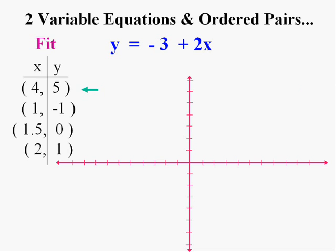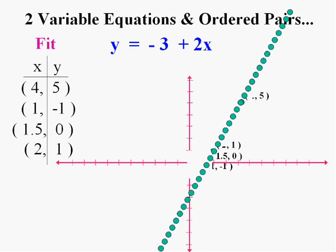Let's plot (4, 5), over 4 and up 5, (1, -1), over 1 and down 1, and (1.5, 0). I'm going to go over one and a half squares and up none. See that? Over one and a half squares and up no squares. And (2, 1), go over 2 and up 1. Now they're spread out differently but one thing's for sure, if I did other points, they all line up.